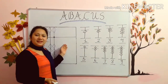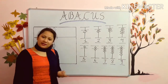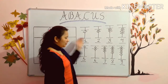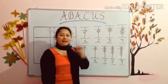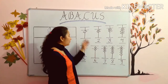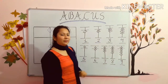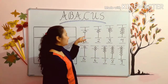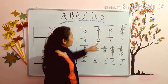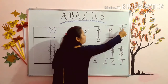Before starting our today's topic, I will revise my previous video topic — that is Beads from 1 to 9. Last time I explained how to draw beads from 1 to 9. These beads you have also studied in class first. So let's revise. This bead is 1, this is bead 1, 2, this bead 1, 2, 3.